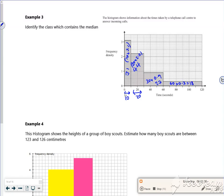So the median is the one with the biggest value. So that has to be this one here. So it says identify the class which contains the median. So that would be 10 less than or equal to t less than 30. There.